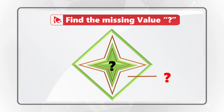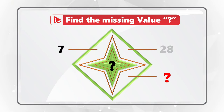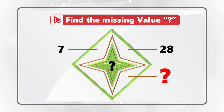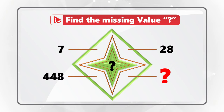For example, number 7 is at 11 o'clock, number 28 at 1 o'clock, then comes the missing number at 5 o'clock, and then there is a number 448 at 8 o'clock. In the center of the combined shape, there is also a missing number represented by the question mark.